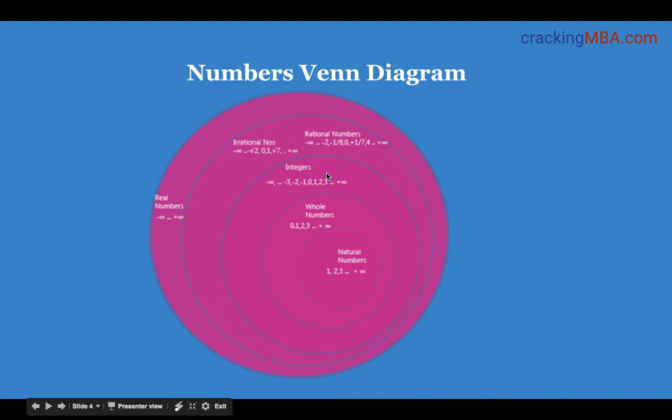Then you have the integers which represent the entire spectrum from minus infinity to plus infinity. So you will notice that the integers also have zero, one, two, three and so on up to plus infinity which represents all the whole numbers.